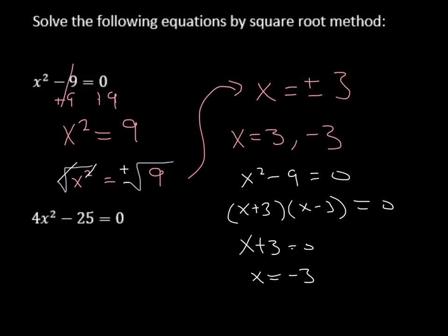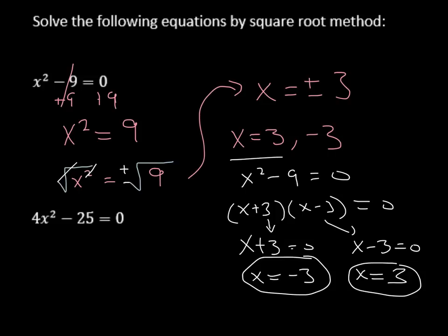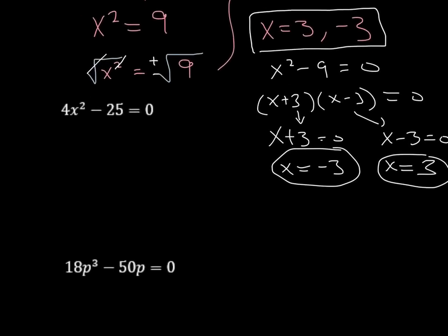And then we would set this one equal to 0, and we get x minus 3 equals 0. We would add 3 to both sides, and we would get x equals positive 3. So you see, we got two answers when we solved by factoring. Using this method, we also get two answers. You just really have to make sure that you put a plus or a minus in front of that square root.